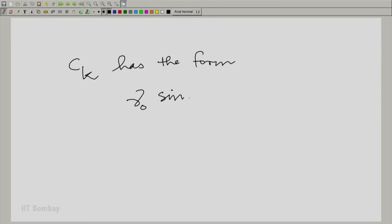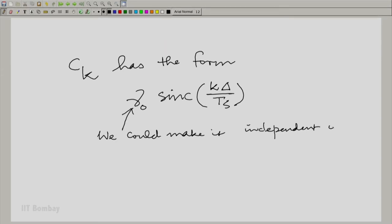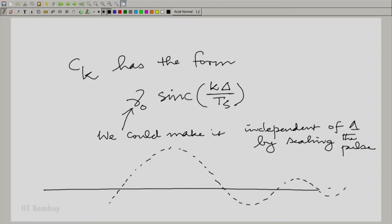We saw that Ck has the form gamma 0 sinc of k times delta by Ts. You could essentially try and make it independent of delta. I am repeating some of these ideas, you must fix these ideas in our mind. It is important to review them from various perspectives. It is really samples of an envelope. So I have an envelope like this, a sinc envelope and you have samples of this envelope with a spacing of delta by Ts.